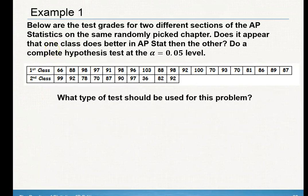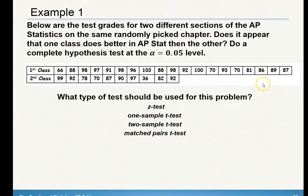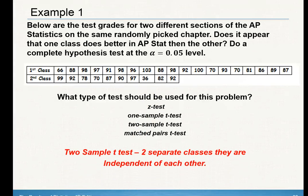There are two different sample sizes, so what kind of test should be used? A z-test, one-sample t, two-sample t, or matched pairs? In this case we're using a two-sample t-test because they're two separate classes that are completely independent of each other.